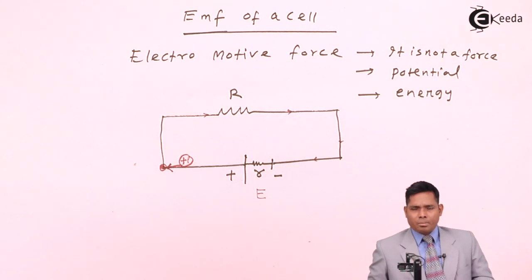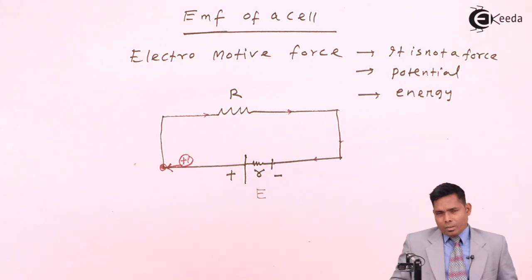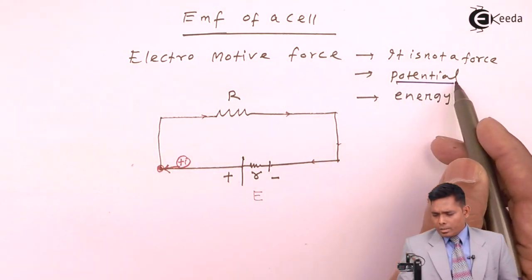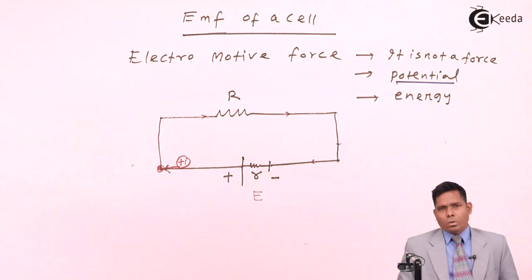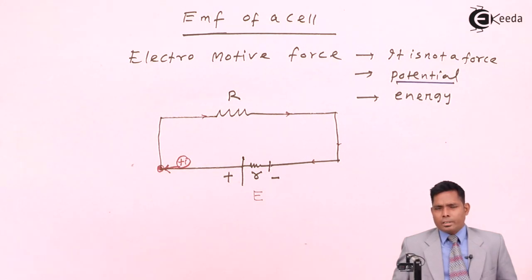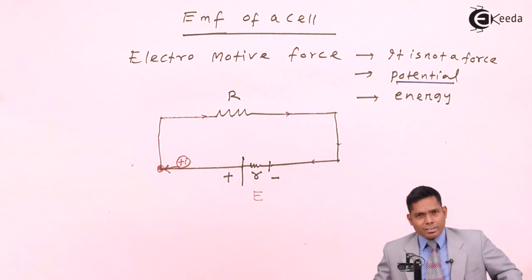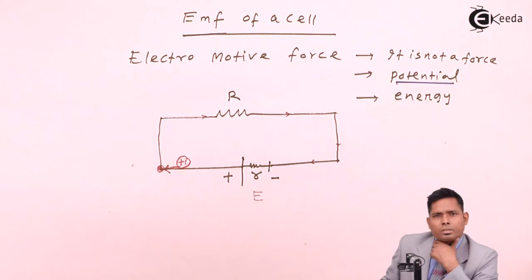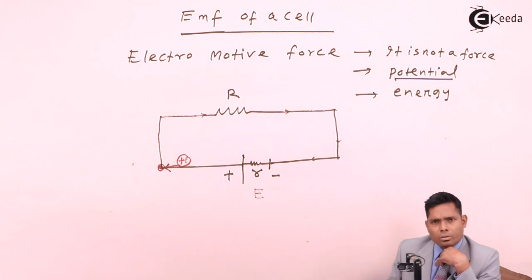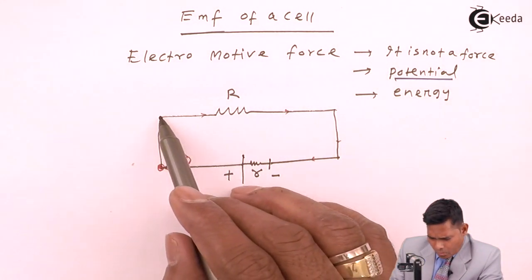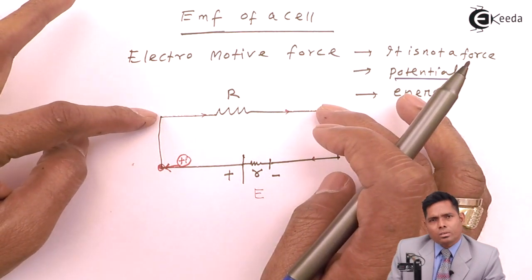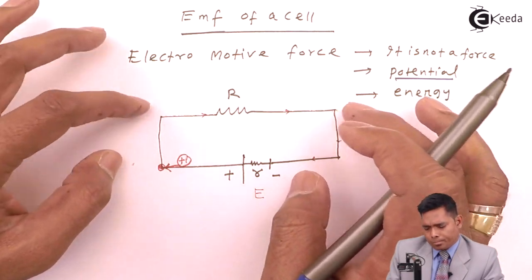EMF is basically a potential — specifically, it is the potential difference across the terminals when there is no current drawn from the battery. We will discuss this in more detail when we write the equations. What is used externally by the circuit is called the terminal potential difference.